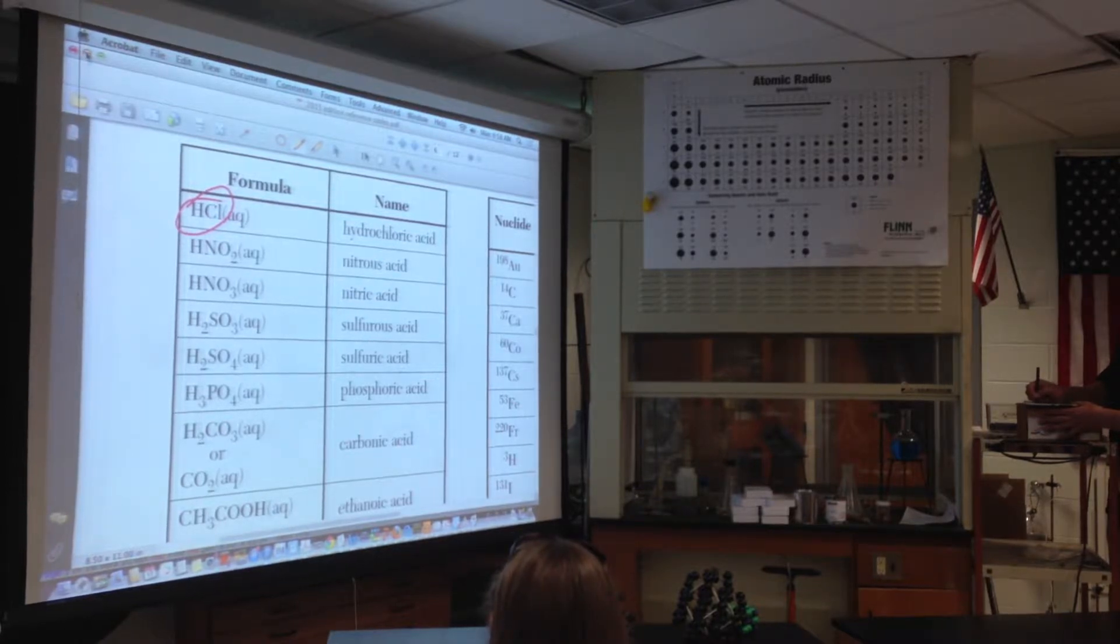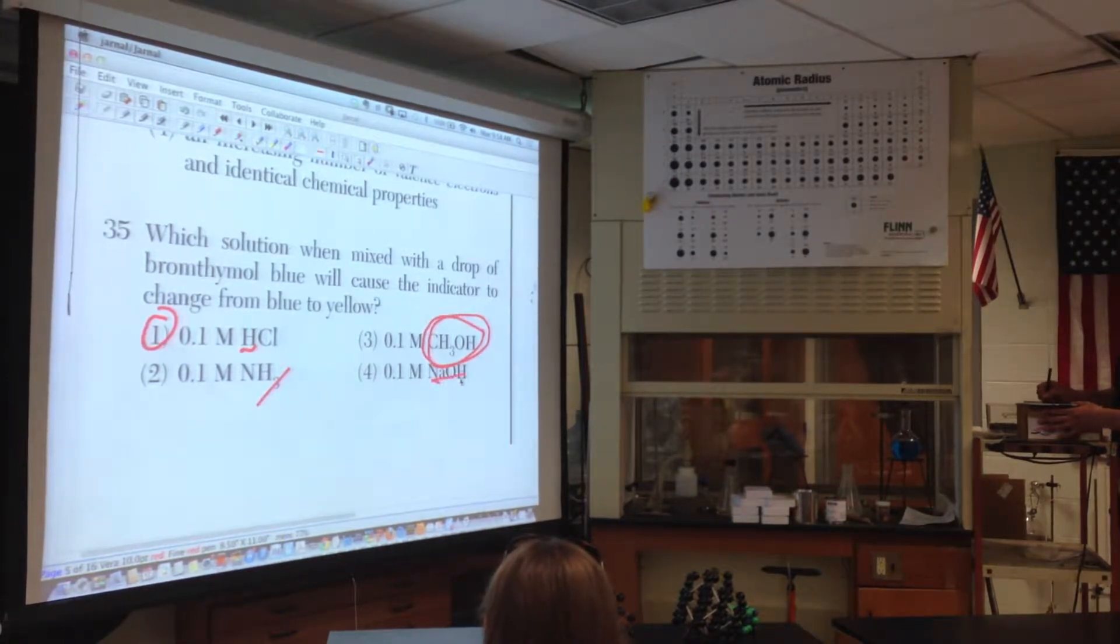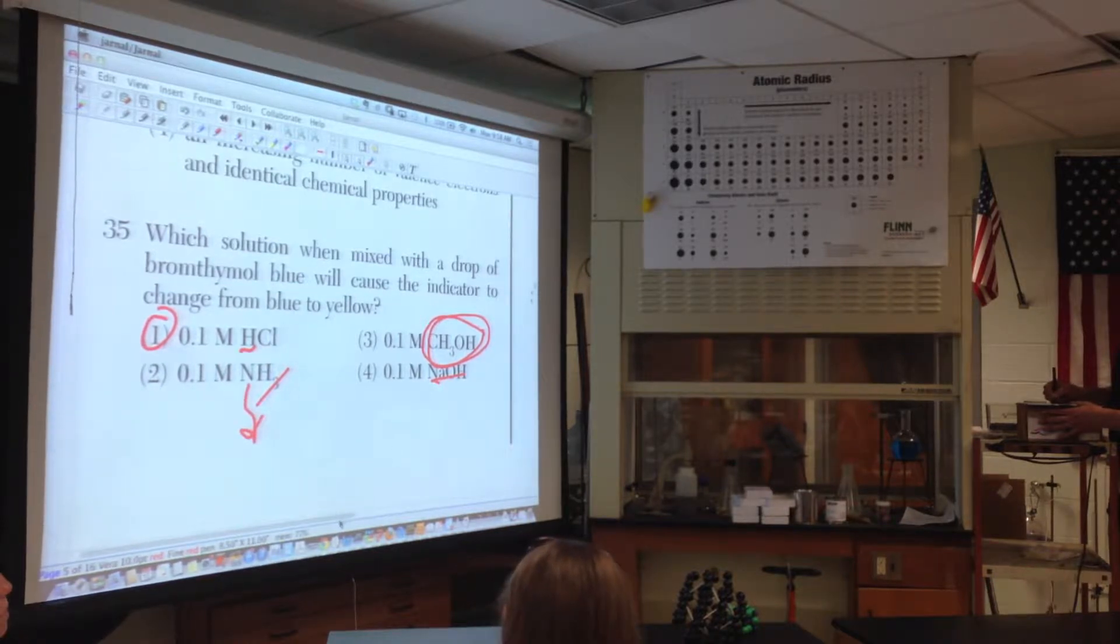So table M. And we want bromothymol blue getting yellow. There it is. Oh, getting yellow would mean, right, I'm 6.0 or lower. So I'm looking for an acid. That's how you read table M. So I'm looking for an acid. And acids donate H pluses. Choice one. And if you didn't know this party people, they give you a table of acids.